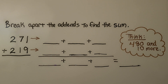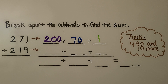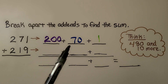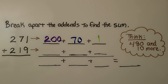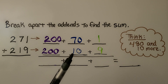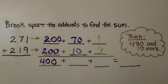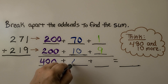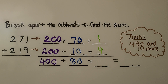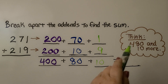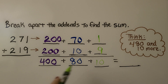We need to break apart the addends to find the sum. We have 271 plus 219. 271 is 200 plus 70 plus 1. 219 is 200 plus 10 plus 9. Now we add the hundreds: 200 plus 200 is 400. 70 plus 10 is 80. 1 plus 9 is 10. And now we think 480 plus 10 more. That would be 490.